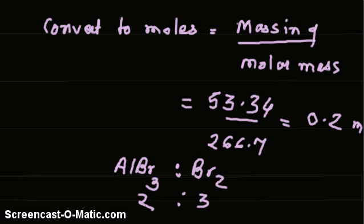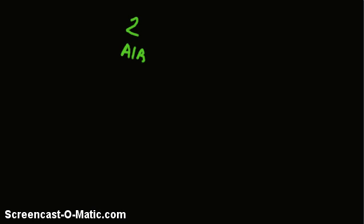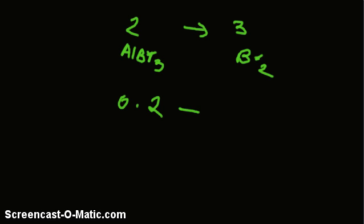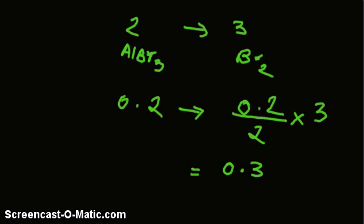Now use this ratio to find the corresponding bromine required for the given quantity of aluminium bromide. If 2 moles of AlBr₃ require 3 moles of bromine, then 0.2 moles will require 0.2 divided by 2, multiplied by 3. The answer is 0.3 moles of bromine consumed.